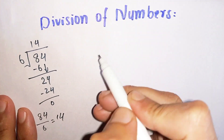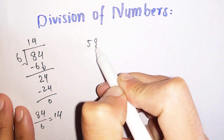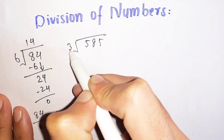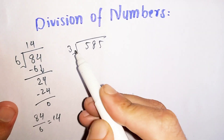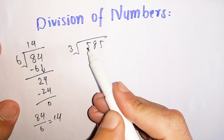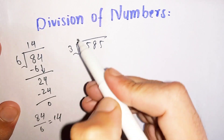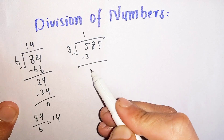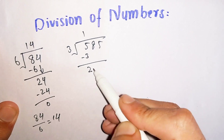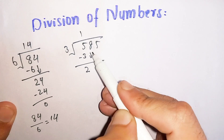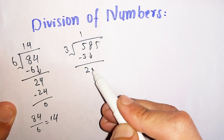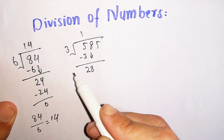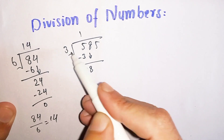Here is another example. We are dividing 5885 by 3. How many times does 3 go into 5? 3 times 1 is 3. Subtract 3 from 5, the remainder is 2. Now we cannot divide 2 by 3, so bring down the 8 near 2, which becomes 28. How many times does 3 go into 28?